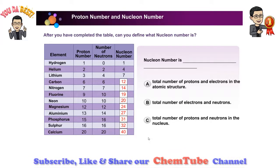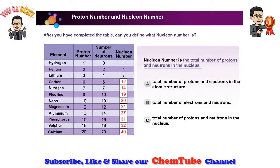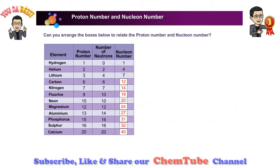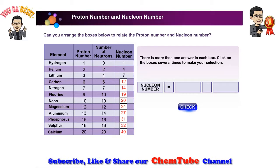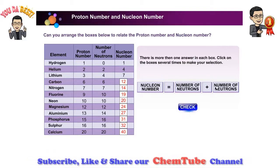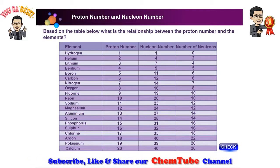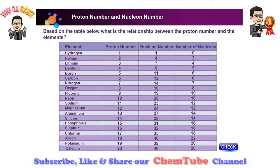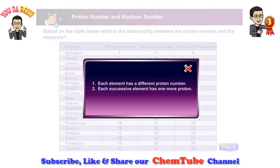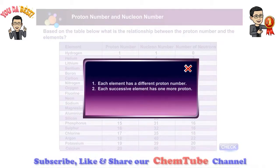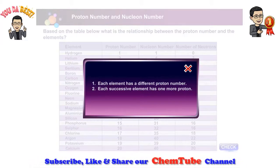Can you define what nucleon number is? Nucleon number is the total number of protons and neutrons in the nucleus. What is the relationship between proton number and nucleon number? From the table, we know that each element has a different proton number. Each successive element has one more proton.